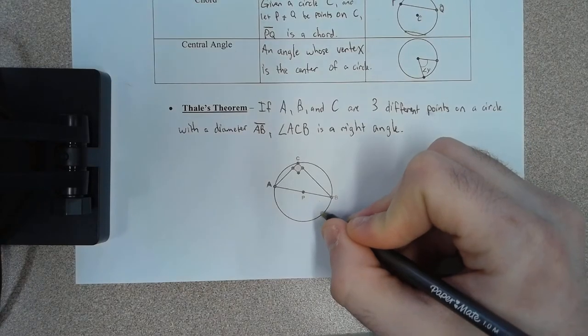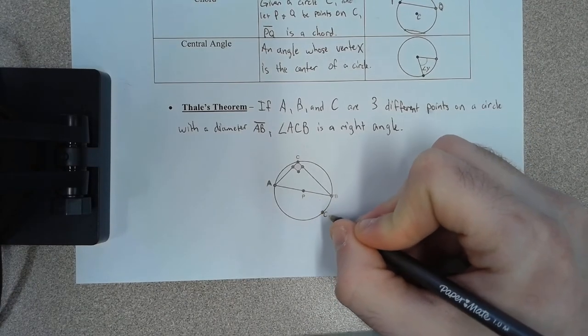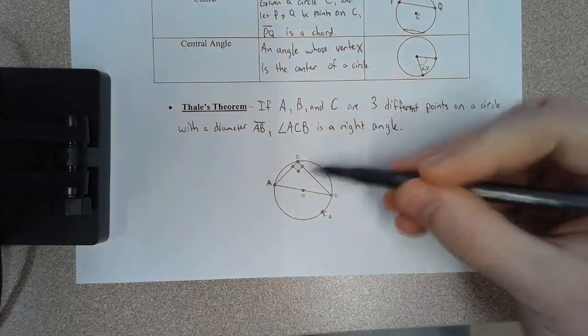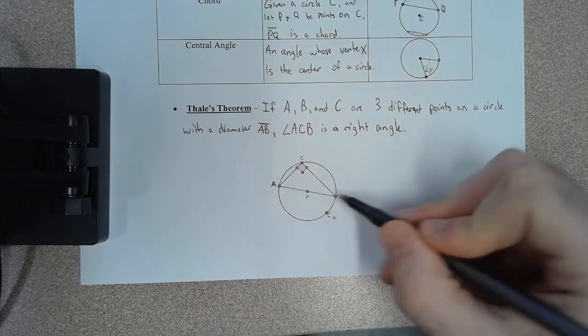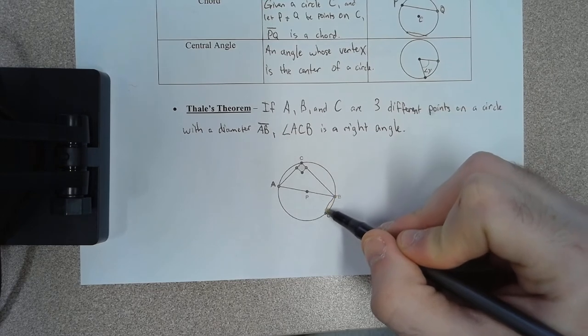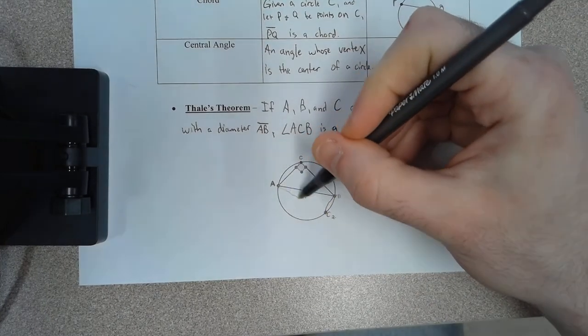I can draw a point down here, and I'll call that point C2, so we've got C1 up here, we'll call that C2. If I connect my diameter with this C2, boom, right there, and then across just like that,